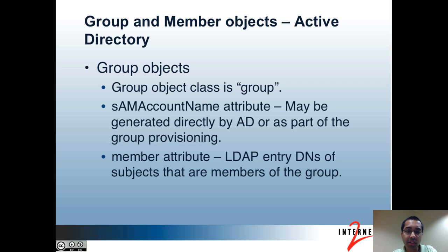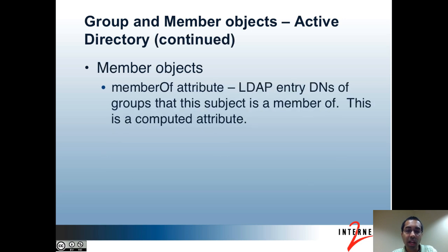Now I'll mention how group and member objects may typically look in an Active Directory. For group objects, the object class typically used is simply 'group'. The sAMAccountName attribute is a unique attribute in AD. Depending on how the LDAP sync is configured, the sAMAccountName may be randomly generated by AD or it may be a value created as part of the provisioning — for instance, at Duke, the sAMAccountName value for groups contains the group name but with colons replaced by hyphens. You would also have a member attribute containing the DNs of subjects that are members of the group. For member objects, you would have a memberOf attribute containing the LDAP entry DNs of groups that each subject is a member of. In AD, memberOf is a computed attribute based on the group objects, so it is not provisioned separately.